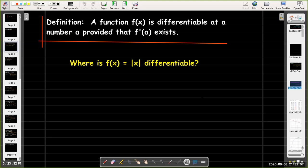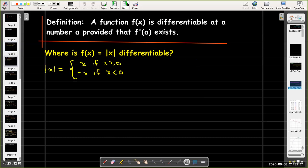Let's take a look at a very familiar function, the absolute value function. Let's find for what values of x is f(x) equals the absolute value of x differentiable. As we've done in the past, we're going to rewrite the absolute value function as a piecewise defined function. We recall that the absolute value of a number is just the same number if the number is greater than or equal to zero, but you have to change the sign if the number is negative.